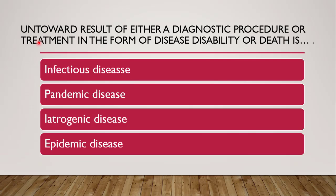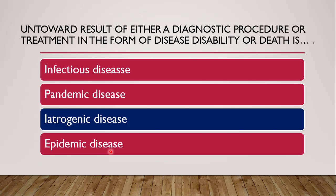Next question: an untoward result of either a diagnostic procedure or treatment in the form of a disease, disability, or death — whether it is infectious disease, pandemic disease, iatrogenic disease, or epidemic disease. The correct answer is iatrogenic disease, because iatrogenic disease refers to any untoward result of either a diagnostic procedure or treatment in the form of disease, disability, or death.